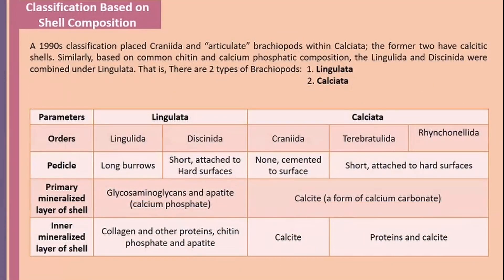Shell composition is used as the same classification basis, with orders including Cranida, Calciata, and Terebratulida. The primary mineralized layer of the shell is important: the linguliform type uses calcium phosphate, while others use calcium carbonate.